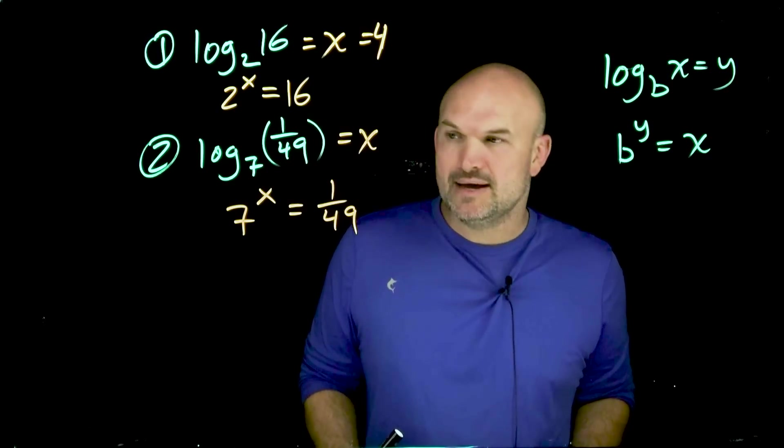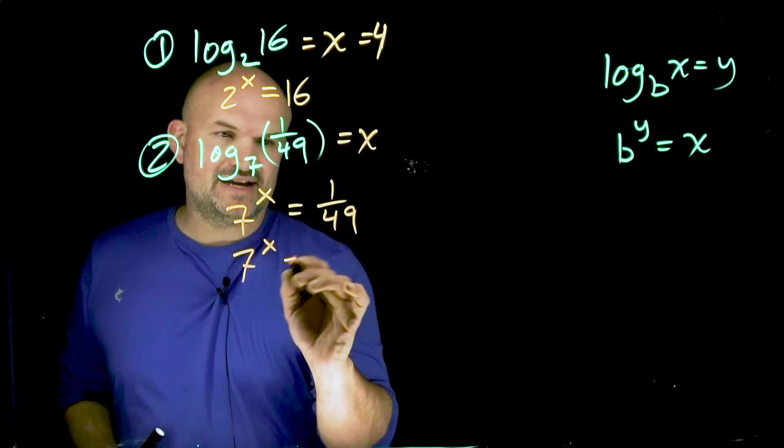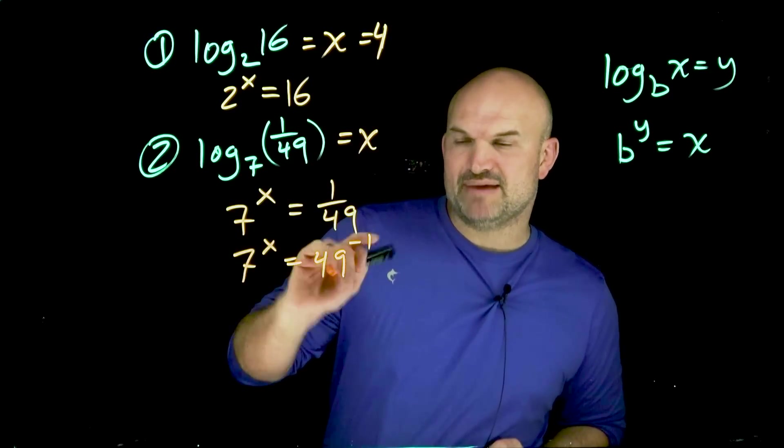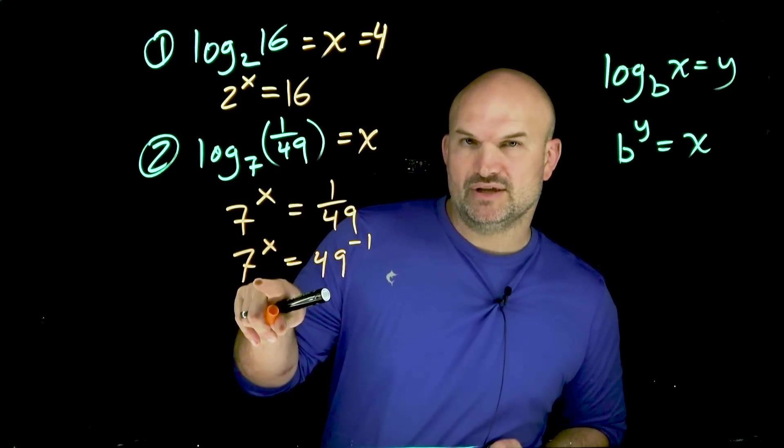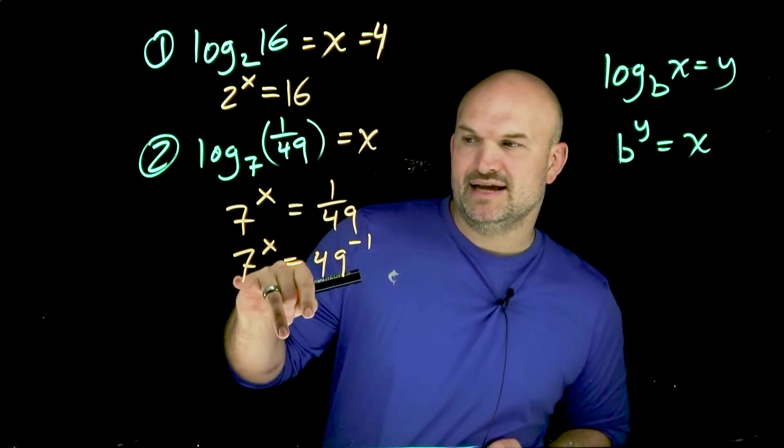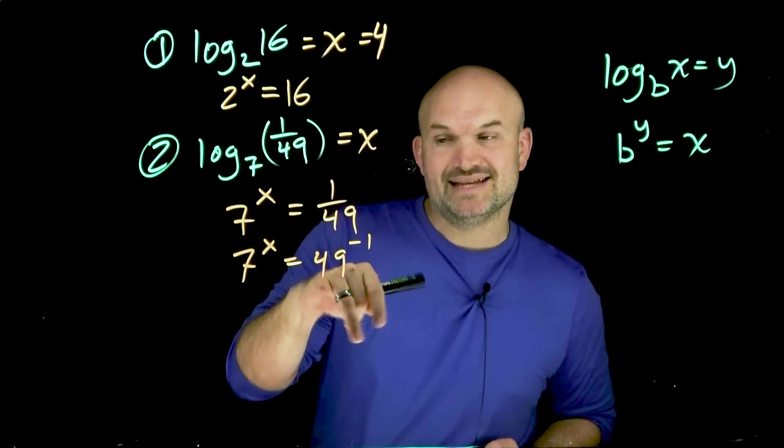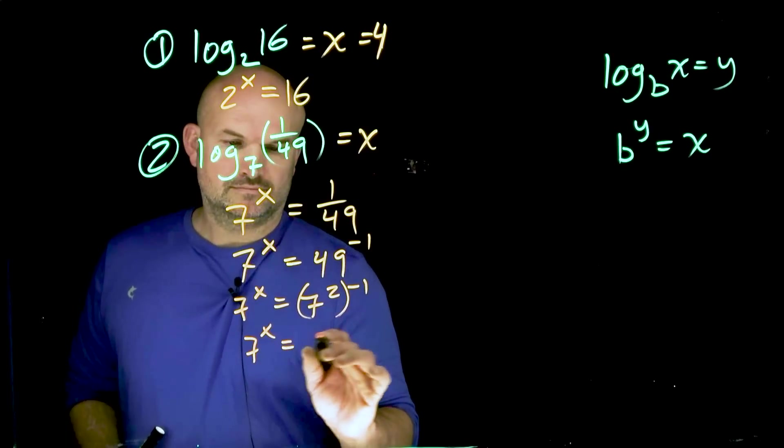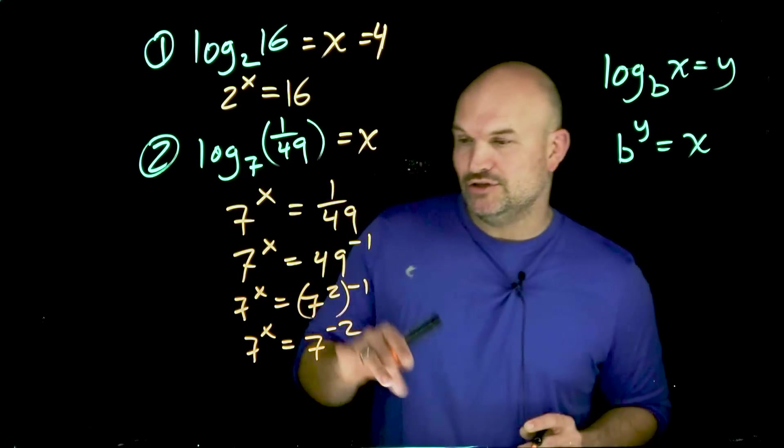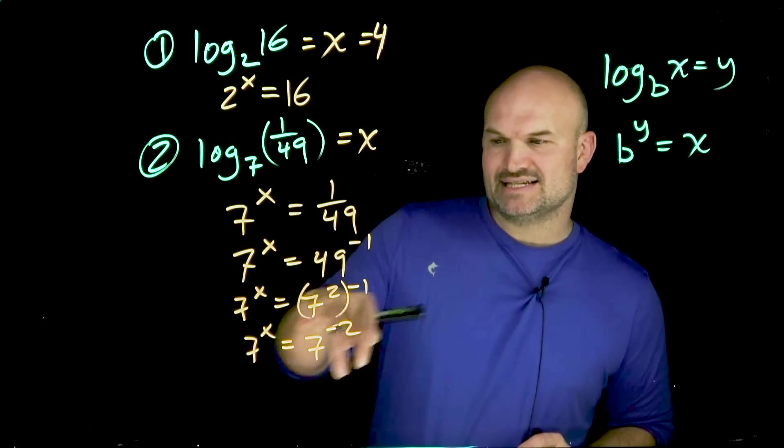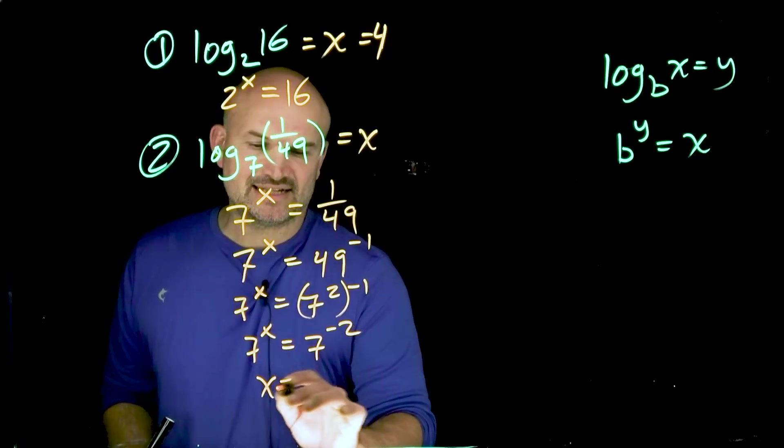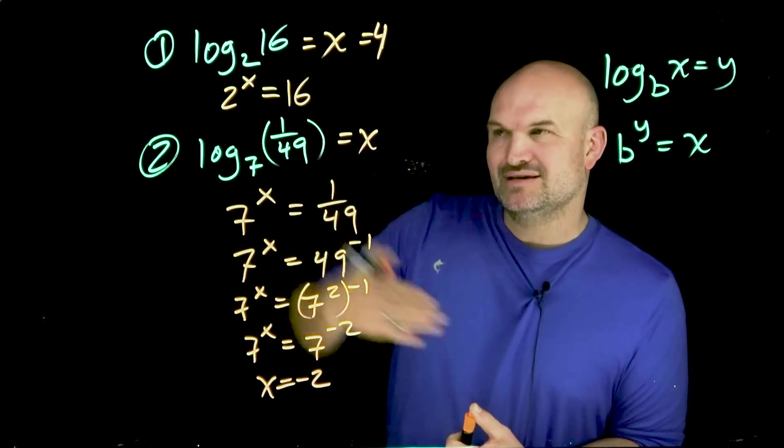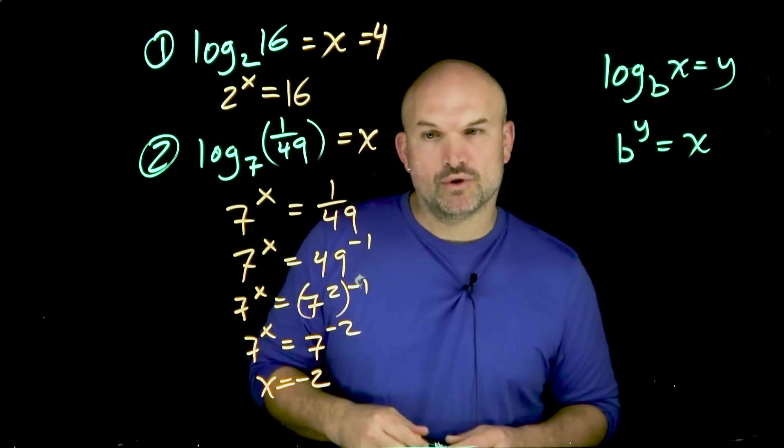If I rewrite this as 7 raised to the x equals 49 raised to the negative first power, now I want to be able to say, can I rewrite these bases so they're exactly the same? Well, there's nothing I can do with the 7, but can I rewrite 49 as 7 raised to a power? I can rewrite that as 7 squared. So now by utilizing my one-to-one property, if I have 7 raised to the x equals 7 raised to the negative 2, I can see that x is going to equal negative 2. So whenever you see some fractions, just think to rewrite that with your negative powers.